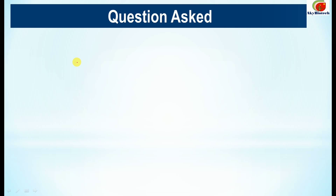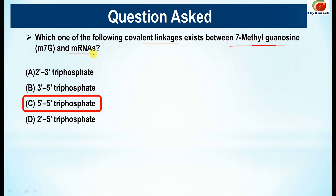Here comes a question which was asked in the previous video: Which one of the following covalent linkages exists between 7-methylguanosine and the mRNA? The correct answer is the 5' to 5' triphosphate linkage.